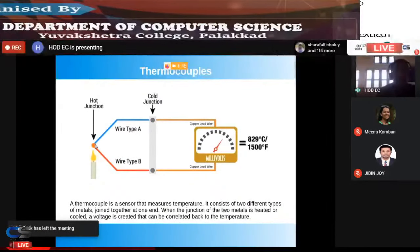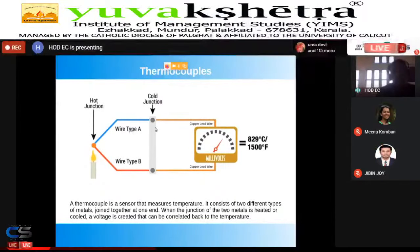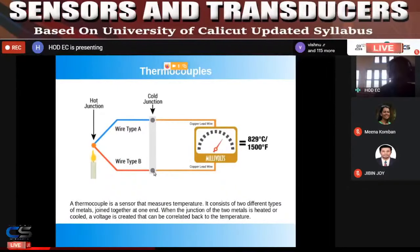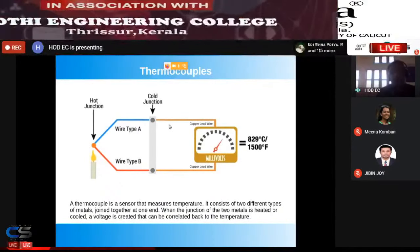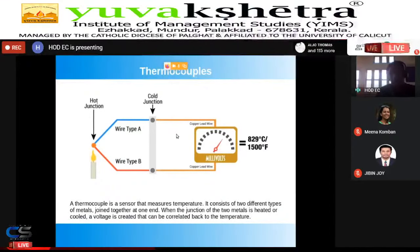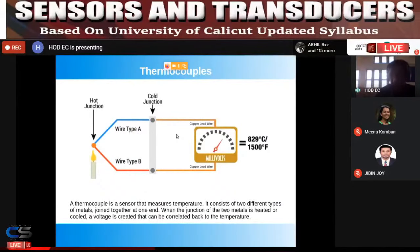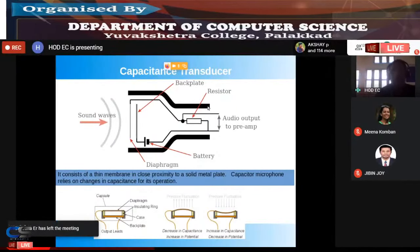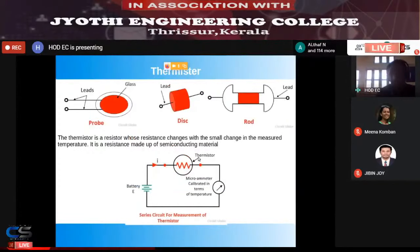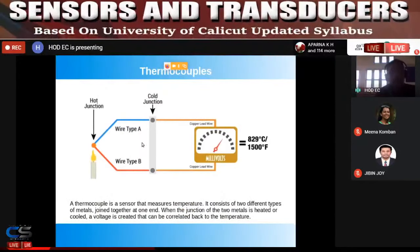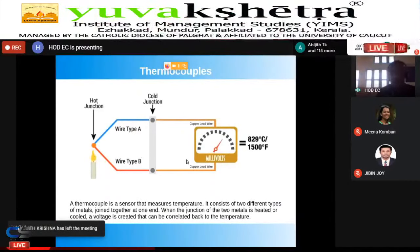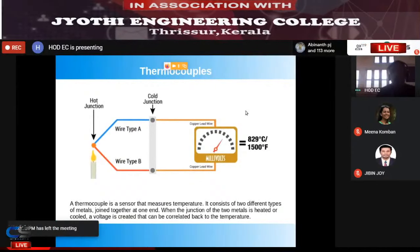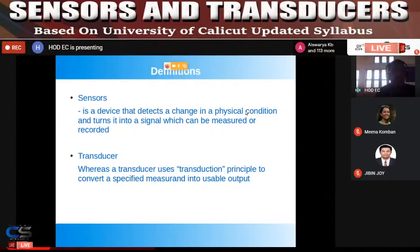Two different wires are joined at the hot junction; the other ends are kept at a cold condition. The voltage between these two ends can be measured directly. There are two types of sensors: those that need a transduction element to get an electrical signal, and those like the thermocouple that are self-generating and can transform heat into electrical signal without any external power supply.